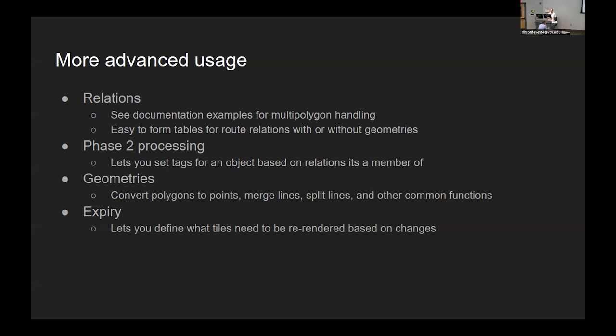Phase 2 processing allows you to get information for way stuff from the relations. The relations have to be processed later because they come at the end of the file, so this allows you to go back and revisit ways. There's a bunch of new stuff with geometry, so you can do stuff like converting polygons to points, merging lines, splitting lines, and other common things that you need if you're going to render a map.